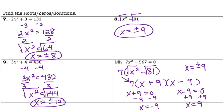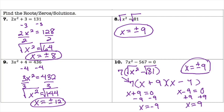You might wonder whether setting the 7 equal to 0 gives another answer — but 7 cannot equal 0, so it is not a root. However, if the GCF had contained a variable, like 7x, you could set 7x equal to 0 and solve for x to get an additional root. Since our GCF here is just the constant 7, the answer to number 10 is simply x equals plus or minus 9.